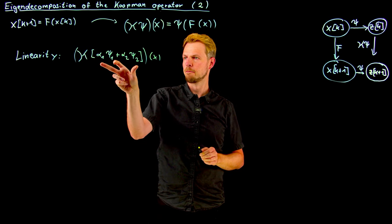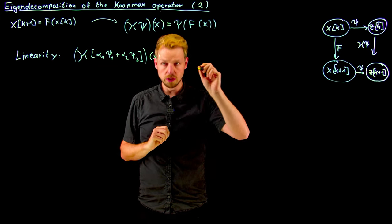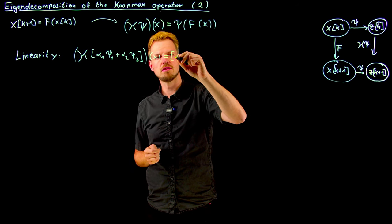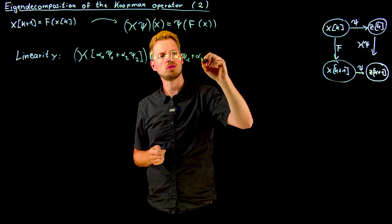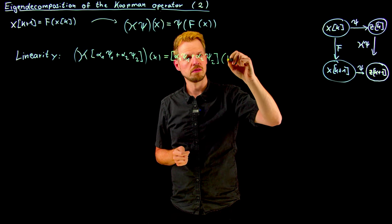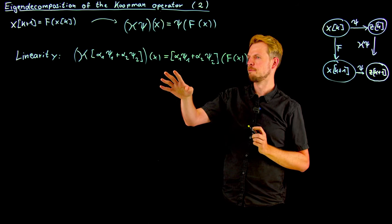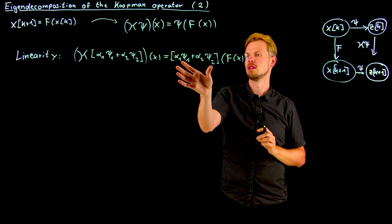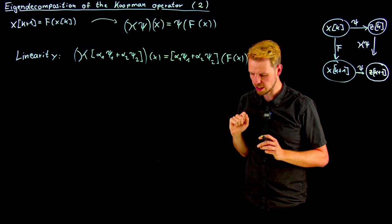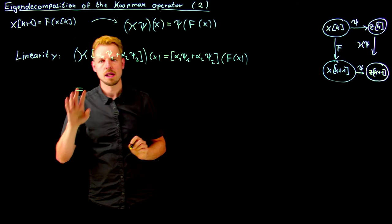All I'm doing is using the definition of the Koopman operator and then defining this specific observable function which is a linear combination of two of them. So what you can do is simply use what's here and say okay, if we do it like this then this means that I have alpha_1 psi_1 plus alpha_2 psi_2 of F(x). That's all I'm really doing is plugging in the definition that tells us if we have such an observable function, then what we do is we evaluate this observable function at the next time step after we have used the flow on our state.